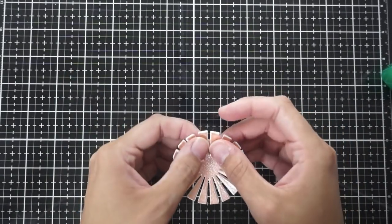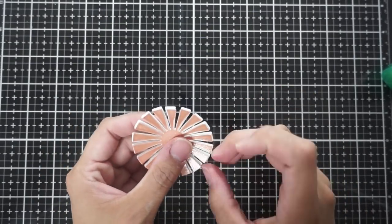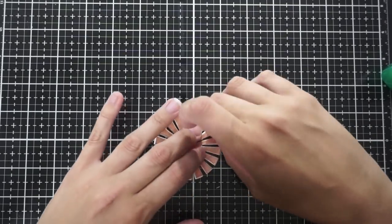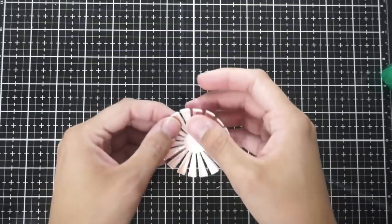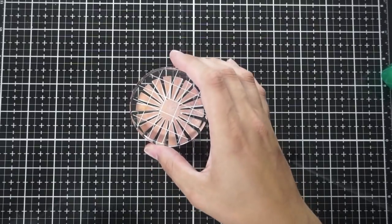I'm adhering the Sunburst die cut to the die cut with the craft foam and this will give it a lot of dimension when I put it on the card front. I'm just using Tombow mono liquid glue for that and to make sure it sets flat I'm going to put an acrylic block over it while it dries.